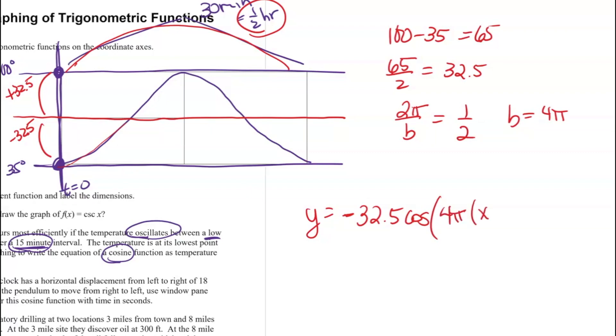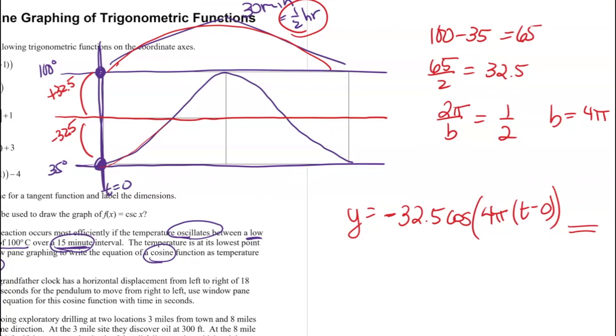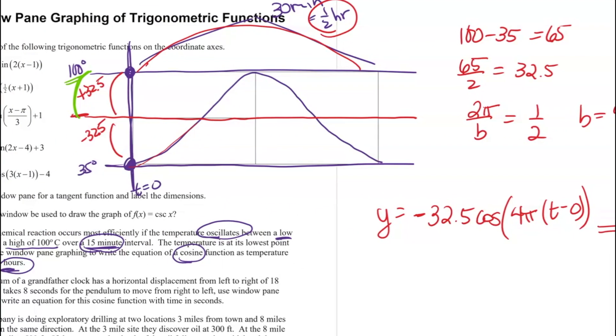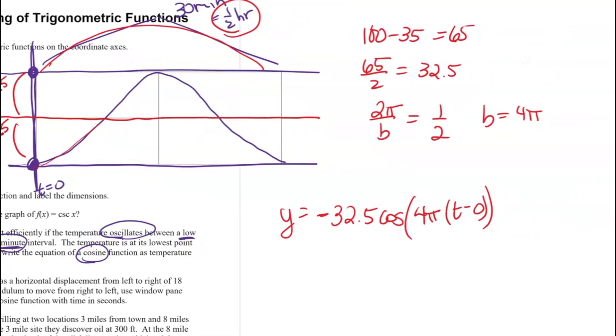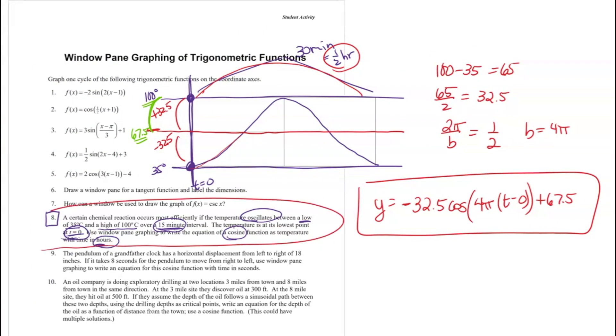So this is 4π times t minus—here I'm going to put my horizontal shift, which happens to be zero. So t minus zero, which of course you could leave off. Then I finally need my midline. In order to get my midline, I'm going to say, what value did I have to be sitting at in order to add the 32.5 and get to 100? You can do some pretty quick arithmetic and find that midline is happening at 67.5. So this number out here is plus 67.5. That will give you a cosine curve that matches this description.